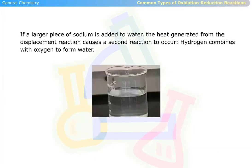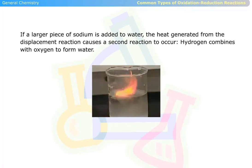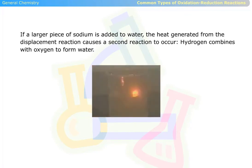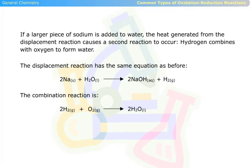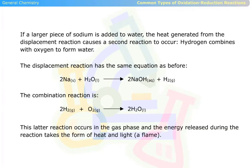If a larger piece of sodium is added to water, the heat generated from the displacement reaction causes a second reaction to occur — hydrogen combines with oxygen to form water. The displacement reaction has the same equation as before, seen below. This is the combination reaction. This latter reaction occurs in the gas phase, and the energy released during the reaction takes the form of heat and light — it produces a flame.